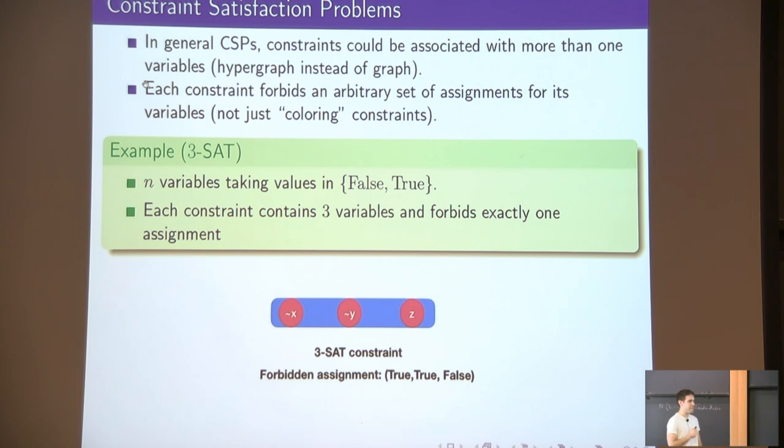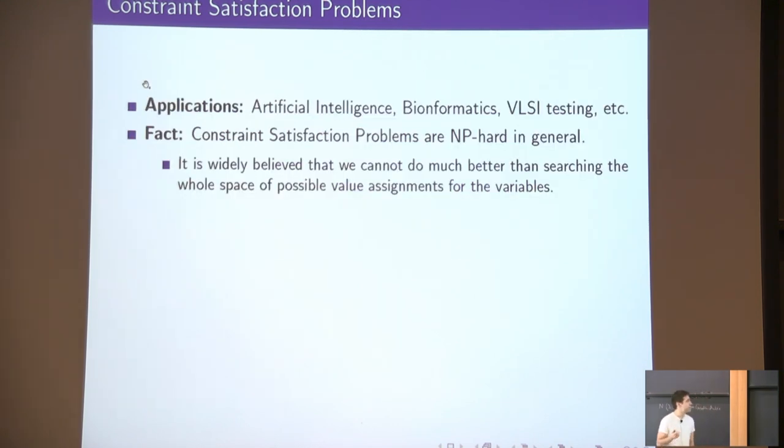So this is roughly what constraint satisfaction problems are, and they are fundamental in computer science and in many other areas like artificial intelligence and bioinformatics. Naturally we would like to be able to solve them efficiently, fast.